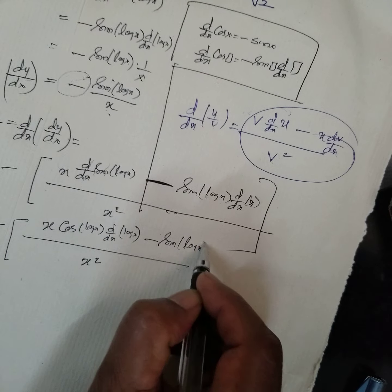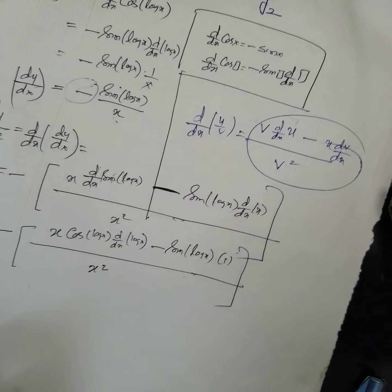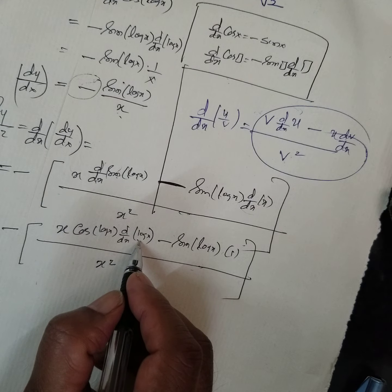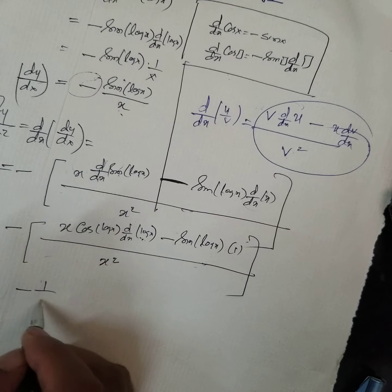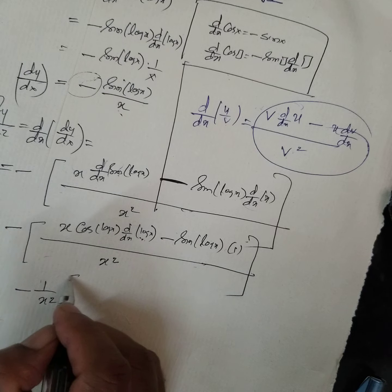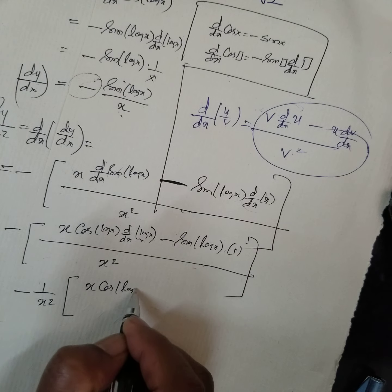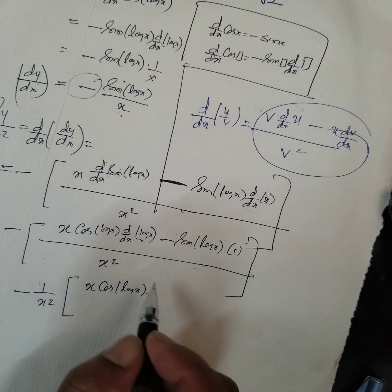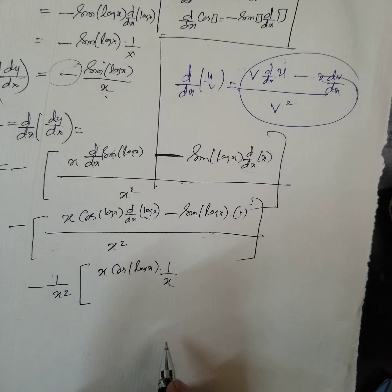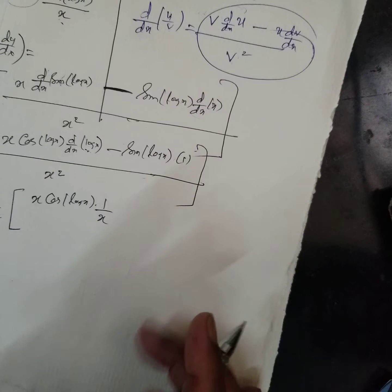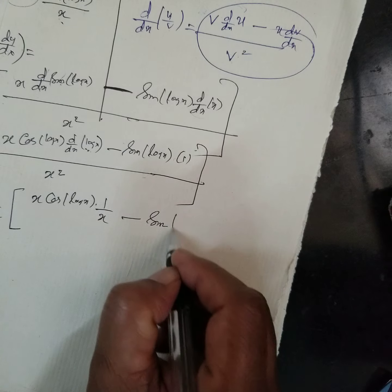The differential coefficient of cos(x) is equal to minus sin(x). According to the chain rule, cos(box) is equal to minus sin(box) into the differential coefficient of that box. Therefore, cos(log x) gives minus sin(log x) into the differential coefficient of log x.